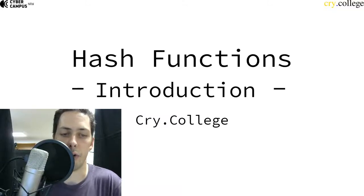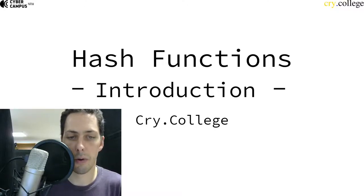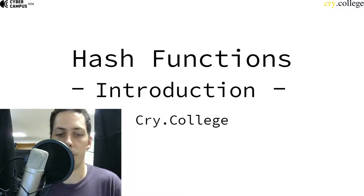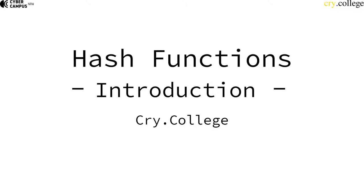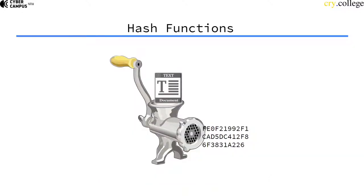New week, completely different topic. We have looked at elliptic curves and public key cryptography — asymmetric cryptography. Now we're going to start looking into symmetric primitives, and we're going to start with hash functions. To hash means to chop something or to make a mess out of something, and that's what hash functions do — they take arbitrary input and scramble it around real good.